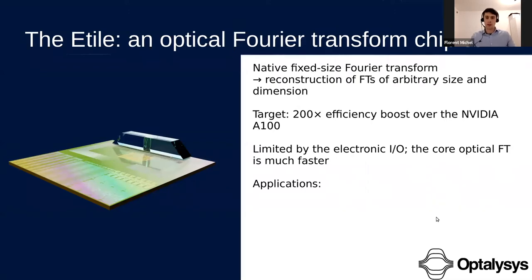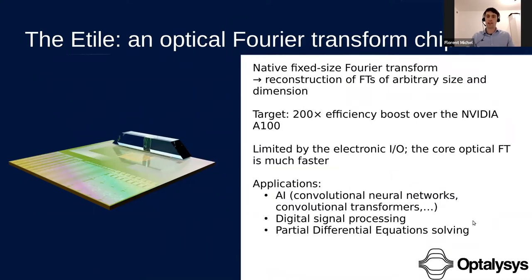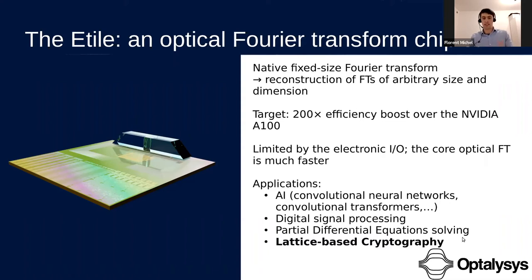In principle, the A-tile can accelerate all kinds of Fourier transforms, and as such has many applications in domains which use Fourier transforms. To cite a few: artificial intelligence, where Fourier transforms are used in convolutional neural networks as well as more recent convolutional transformers or FNets; digital signal processing for modulation, demodulation, and signal filtering; solving partial differential equations using spectral methods; and — the core of my talk today — lattice-based cryptography, which makes heavy use of polynomial multiplications that can be accelerated using the Fourier transform.